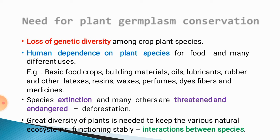Species extinction and many other problems threaten and endanger plant species — some species are nowadays not present on earth due to deforestation or other methods. For that purpose, to avoid extinction, we have to do storage or conservation of those species. Great diversity of plants is needed to keep various natural ecosystems functioning, because not only human beings but other organisms are also dependent on plants, and we have to maintain plant diversity to give survival to other ecosystems.